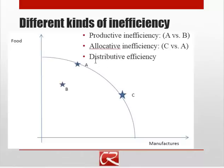Not visible in this diagram is the idea of distributive efficiency. Distributive efficiency addresses the question of: given whatever we've produced and allocated to different people, have we allocated it in a way where there's no way to make anyone better off without making someone else worse off? For example, suppose we produced some food and manufactured goods, gave all the food to one person with no manufactured goods, and gave another person all the manufactured goods but no food. That's obviously inefficient in terms of distribution, because most people prefer some mixture of both. They could trade with each other after receiving their allocation, which would eliminate the distributive inefficiency of misallocating who got what.